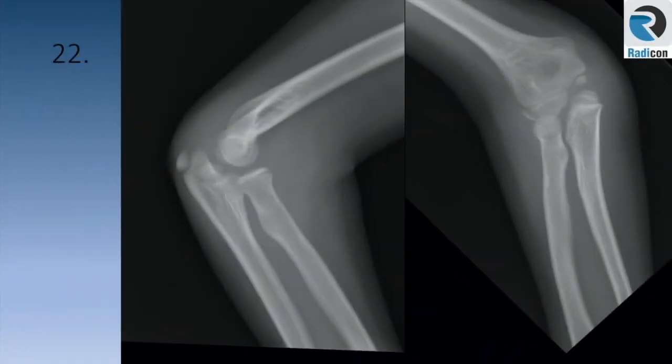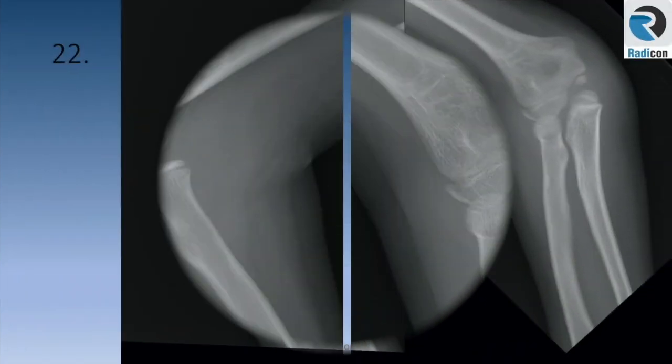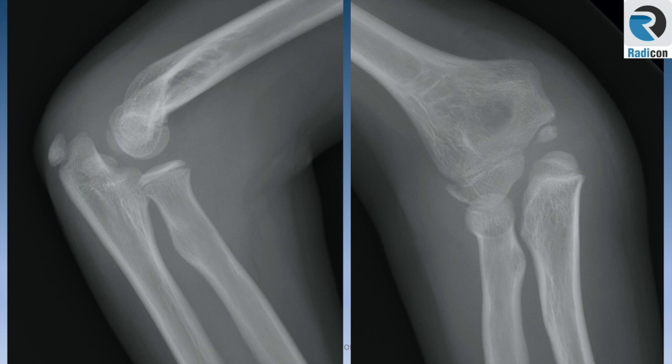Case 21 AP — let's zoom it up. There is minimal elevation of the anterior fat pad. The posterior fat pad is not visible. Normal radiocapitellar and anterior humeral lines. Let's review the apophysis using the well-known CRITOL criteria.